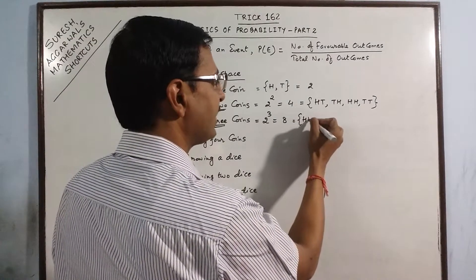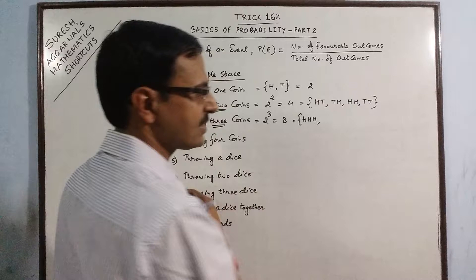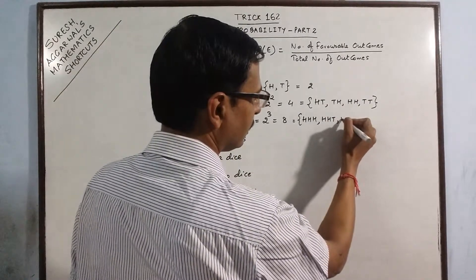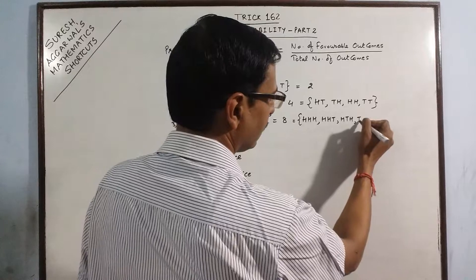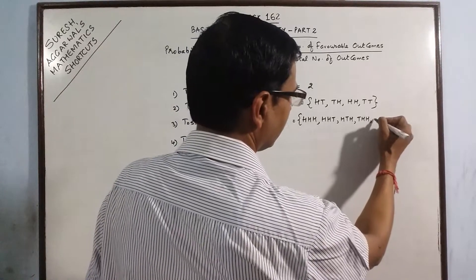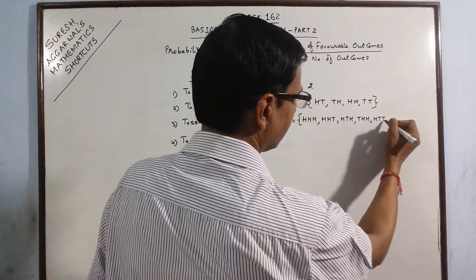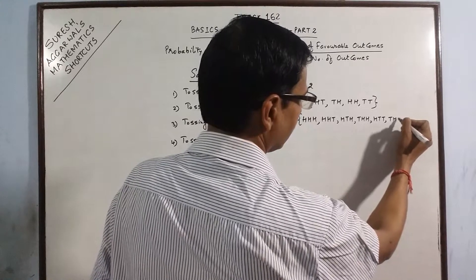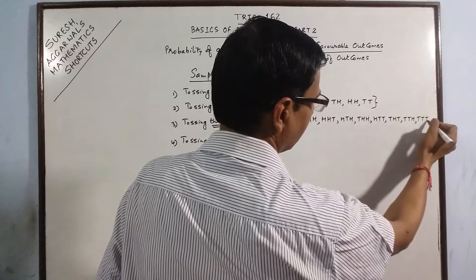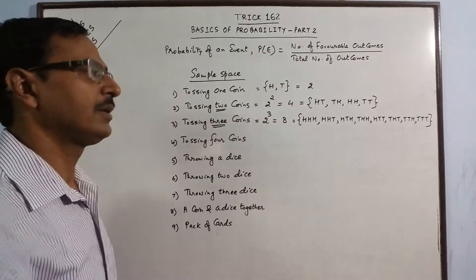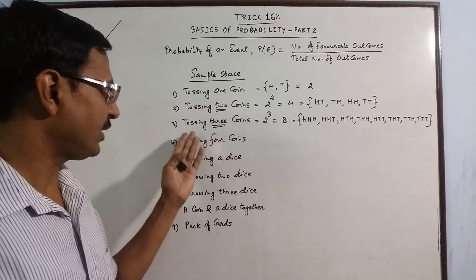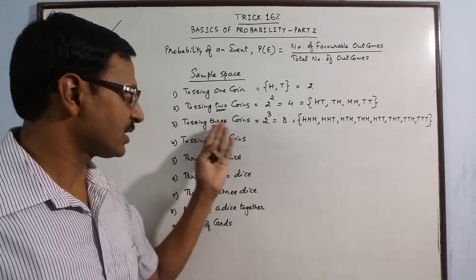If you enlist those outcomes, you start with head-head-head. These are the 8 possible outcomes related to the experiment of tossing 3 coins together.